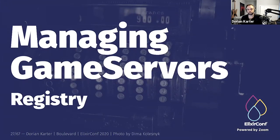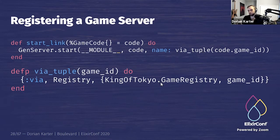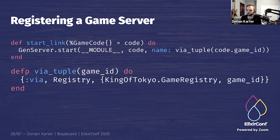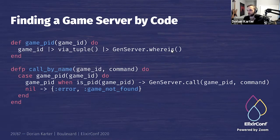Once we have a server, we need to access all the different servers for specific codes a user enters. For that I'm using the Registry. In your game server's start_link, you give it a name using a via tuple — defining which registry to use and what identifier to use. In this case, game_id is a slugified version of the game code the user enters. To find a game server by a code, we use that same function, turning the game_id into a via tuple and asking the GenServer where it is.